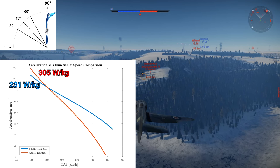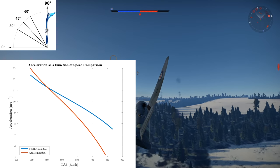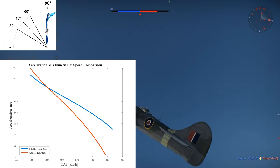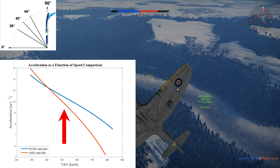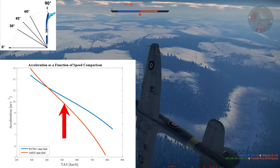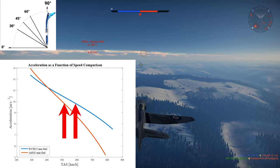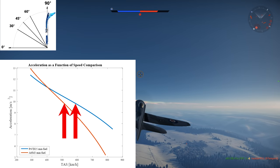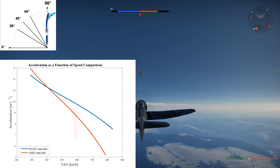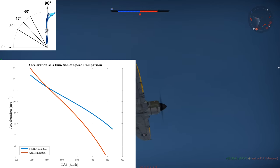The P-47 starts getting the advantage at 400 kph thanks to its higher top speed. The Zero reaches its level flight top speed first at 505 kph, while the P-47 continues accelerating at a higher rate than gravity until reaching its level flight top speed of 590 kph. The acceleration difference between the P-47 and the Zero widens as the speed increases, and that's due to the lower drag-to-mass ratio of the P-47 compared to the Zero.